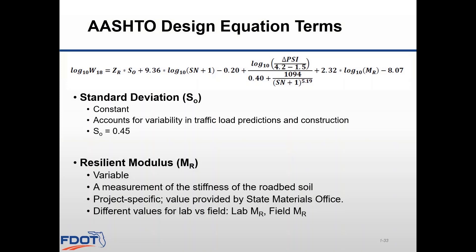The standard deviation is the combined standard error of the traffic prediction and the performance prediction; the department uses a constant value of 0.45. The resilient modulus is a project-specific value for the strength of the in-situ soils that your pavement structure will sit on, provided by the state materials office for every project. There is a difference in resilient modulus values between those obtained through lab testing versus deflection testing in the field — the field resilient modulus is typically higher due to different testing conditions and additional compaction from construction and traffic loading. Therefore, lab resilient modulus values should only be used for new construction or widening projects, and rehabilitation projects should use field resilient modulus data to avoid over-designing the pavement.